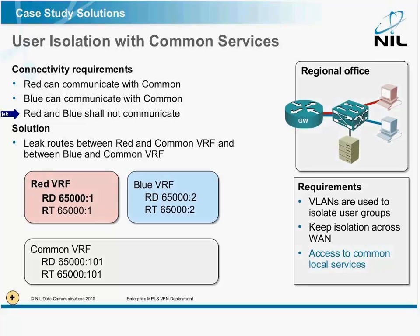The solution is to leak routes between VRFs. You could use static routes and packet leaking like we did before. Route leaking, if you have everything in VRF, is much more convenient. Also, if you change the addressing or if you add a subnet, you don't have to fix your static routing.